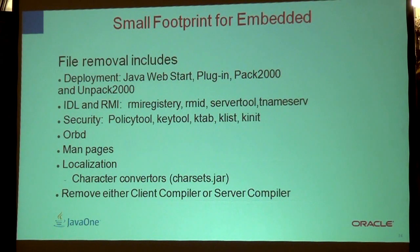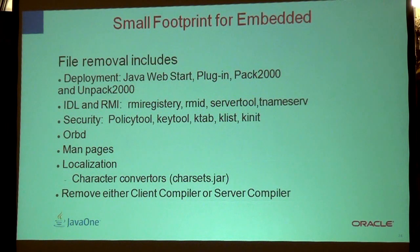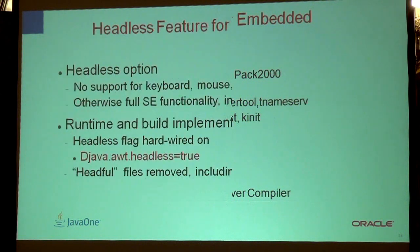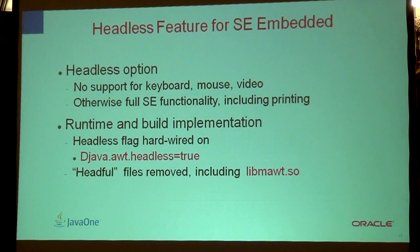From the footprint perspective, we've removed some Java Web Start, plug-in packs, unpack tools, RMI, some security items — though most security things are left in — some man pages, and some localization. These can be put back if needed. For headless support, we don't include keyboard, mouse, and video drivers if we don't want them — we can get the headful or the headless version. By removing headful files, we can reduce memory consumption further.